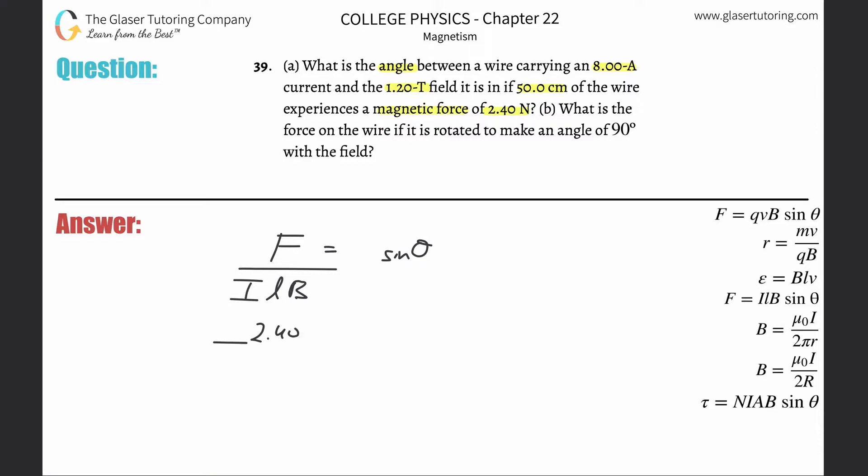What's the force? 2.40 newtons, that's fine. What's the current? 8 amps, right units, that's good. What's the length? 50 centimeters, you know we need that in meters, so multiply by 10 to the minus 2 or just move the decimal two places to the left. And the magnetic field strength is 1.2.